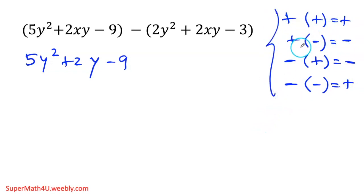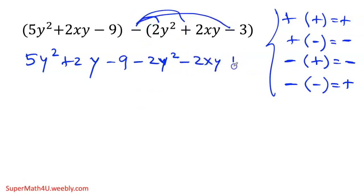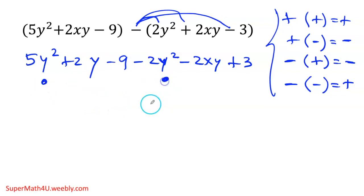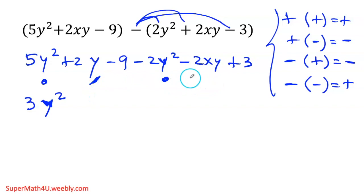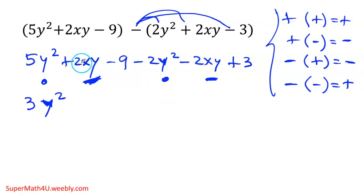These rules apply to division as well. The 2 is positive, so negative and positive gives me a negative. Negative and negative gives me positive. Once I got rid of the parentheses I combine like terms, starting with the highest exponent: y². Five minus two gives me three y², same variable, same exponent. Next, the XY terms — I have XY here and XY there, same two variables. Two minus two gives me zero, so they cancel out.